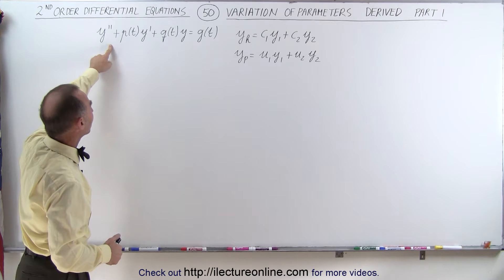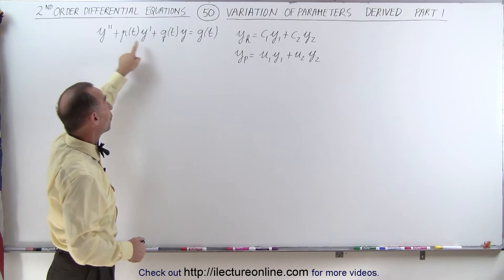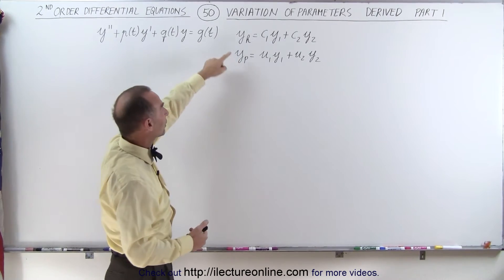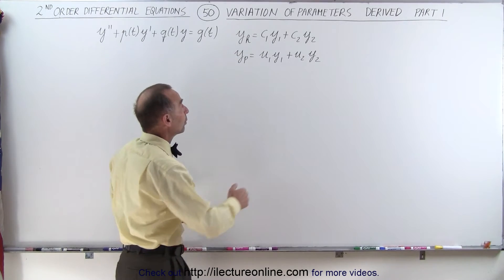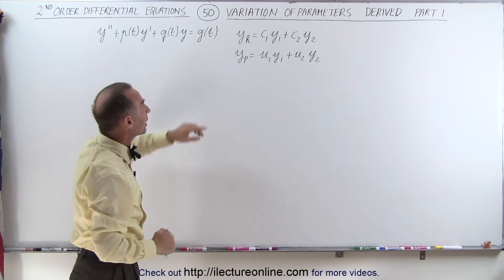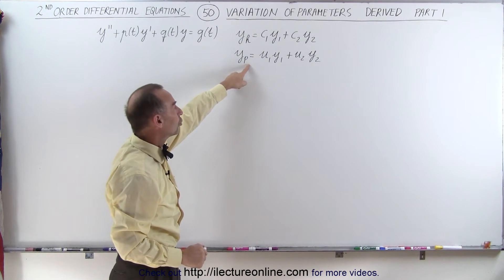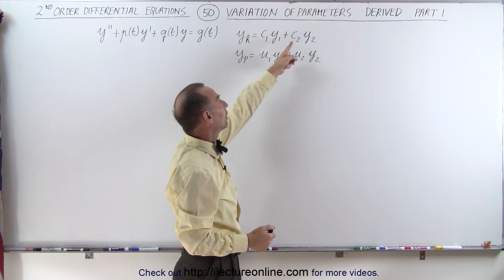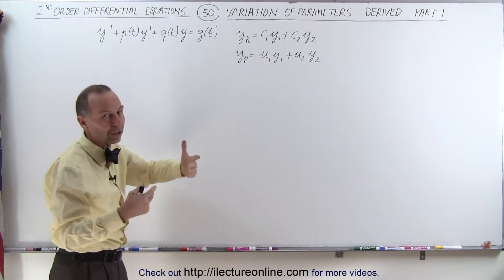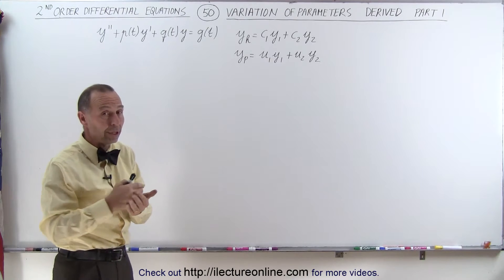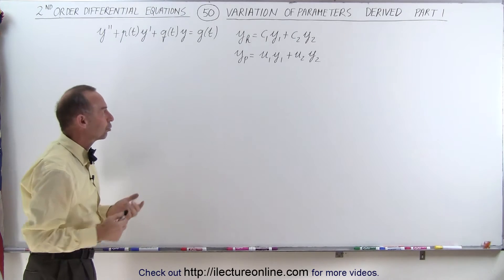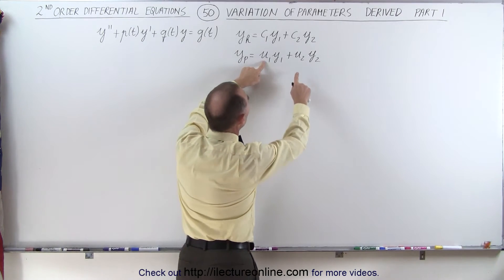It starts with a non-homogeneous differential equation, which can have non-constant coefficients. The homogeneous part of the solution is going to look like what we have here. We still have to show you how to derive y1 and y2, and that will come in a later video. Here we're going to concentrate on how to find the particular solution, assuming we know what y1 and y2 are. In our early examples we're going to take constant coefficients to make it easier. But before we show you the applications, we're going to show you how to derive the equation for the particular solution — in other words, how to find u1 and u2.